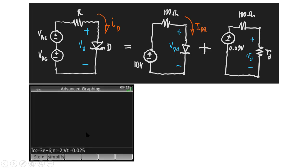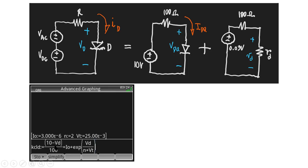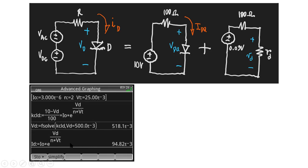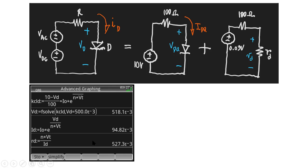With the quiescent current we find the dynamic resistance r_d, and then we analyze the AC circuit — that's all this question is asking. Find the quiescent point from the DC circuit in the usual way: write the diode equation, set up the KVL, solve for V_Q, then find I_Q. Then compute the dynamic resistance: r_d = 0.5 Ω. Now go to the AC model of the circuit.